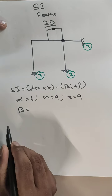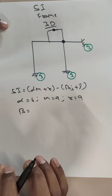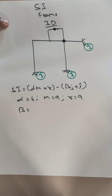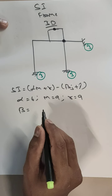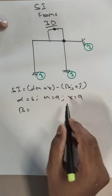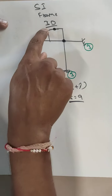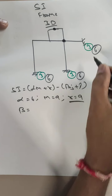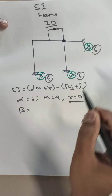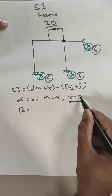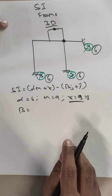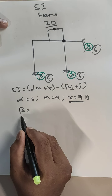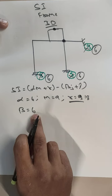Now beta — beta is the available equilibrium equations at each and every joint. As this is a 3D structure, the reactions at each fixed support will be 6, not 3. 3 is for a 2D frame; for a 3D frame it is 6. So 6 × 3 = 18. Total number of reactions is 18. Similarly, the beta value — available equilibrium equations — equals 6 for a 3D structure.